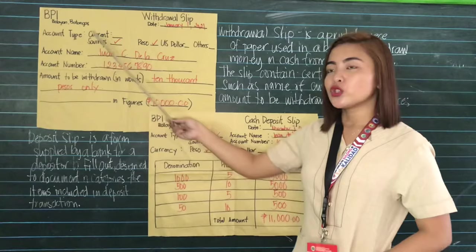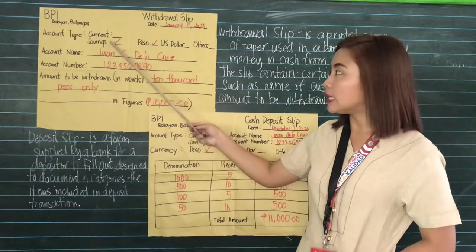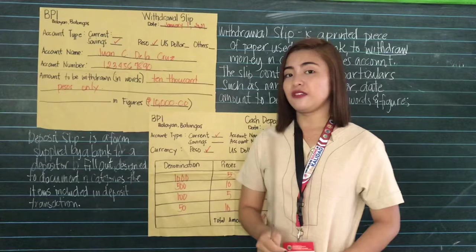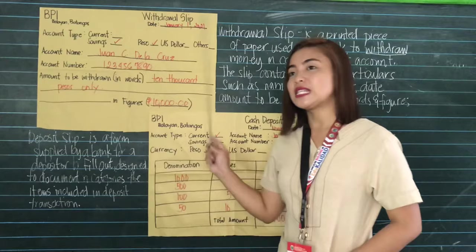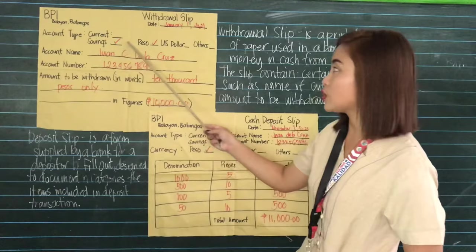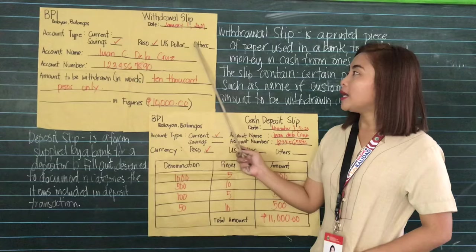Next is the account type. There are different types of accounts, but here written are the two types: current and savings account. In here, we put the check mark on savings since the account that I have is a savings account, so I put the check mark on the savings account.